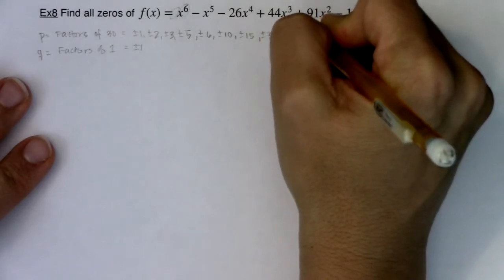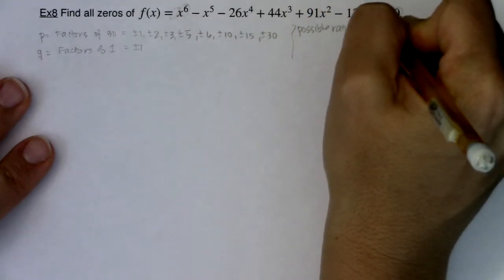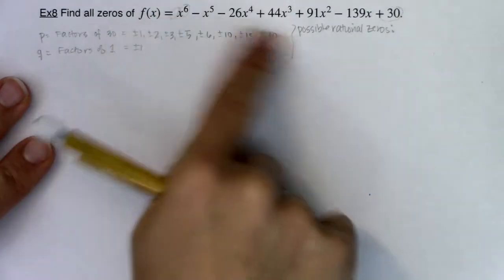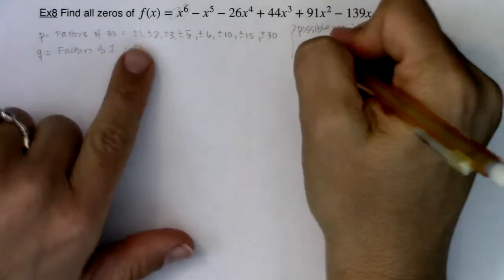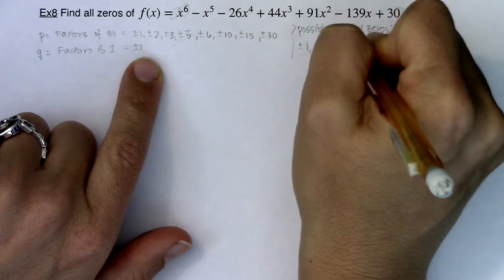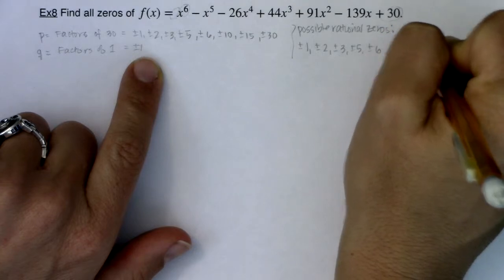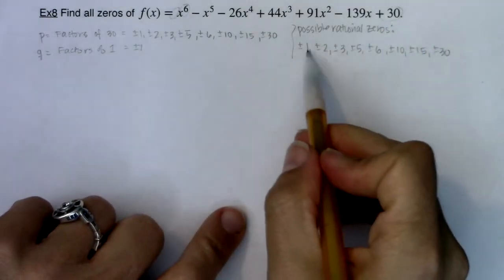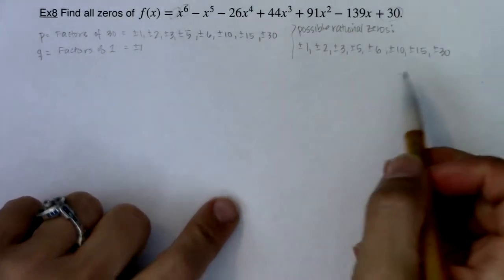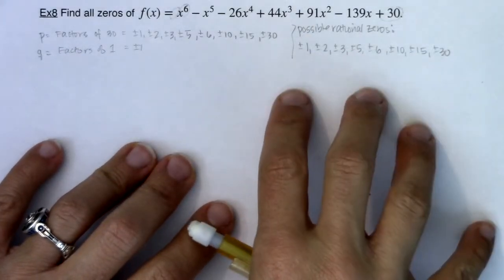When I make my list of possible rational zeros, I would do p's over q's, and the nice thing about this is when q is 1, you're just looking at the factors of p. So my possible zeros are 1, 2, 3, 5, 6, 10, 15, and 30. So I've got it narrowed down to 16 numbers that I could try if I was going by scratch, no starting point, no technology.